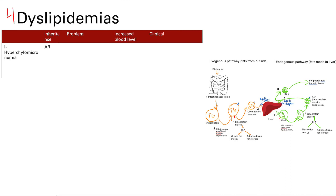The first one is hyperchylomicronemia, autosomal recessive. The problem here is a defect in lipoprotein lipase or an apolipoprotein C2 deficiency. Remember, lipoprotein lipase breaks down triglycerides into free fatty acids, and apolipoprotein C2 is needed to activate lipoprotein lipase. So if either one is messed up, the conversion of triglycerides to free fatty acids does not work.